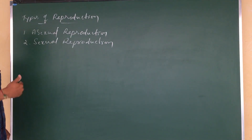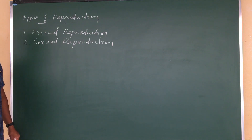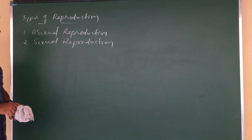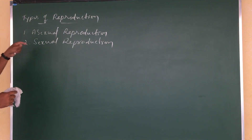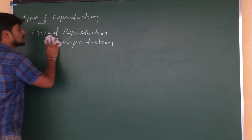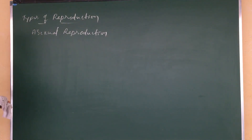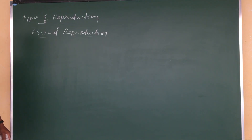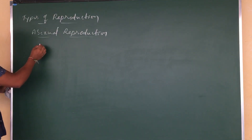We are going to discuss in detail what is asexual mode of reproduction, how it is occurring, what are the features, and also the advantages and disadvantages. So what is asexual mode of reproduction? Asexual means without involvement of two parents or without involvement of gametes. In this process, a single organism is able to produce their young ones without fusion of gametes.